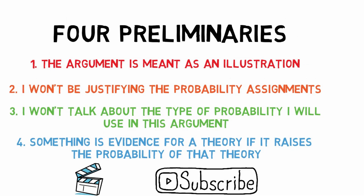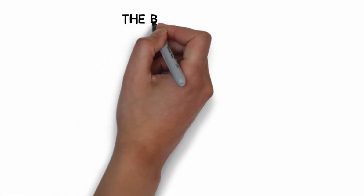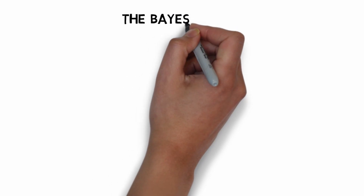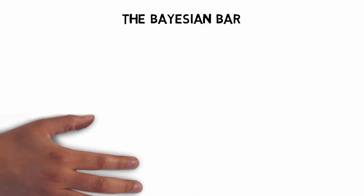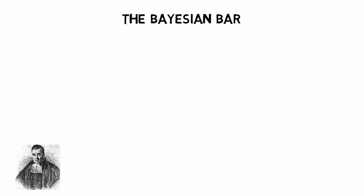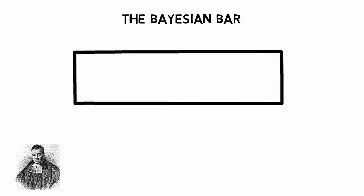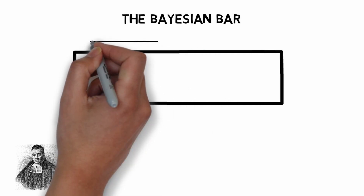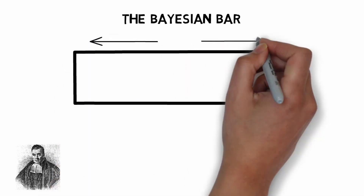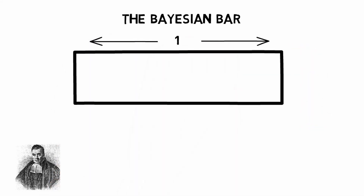In order to think about Bayesian probability visually, we're going to introduce something called the Bayesian bar, after the Reverend Thomas Bayes, who came up with Bayes' theorem. The Bayesian bar is just a rectangle. What's important about the rectangle is its surface area, as this is our total probability space and has the value 1. This is because it contains all our different probabilities, and we're certain that at least one of them is going to be true.